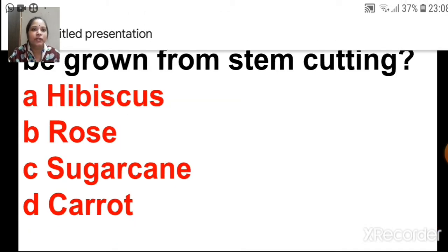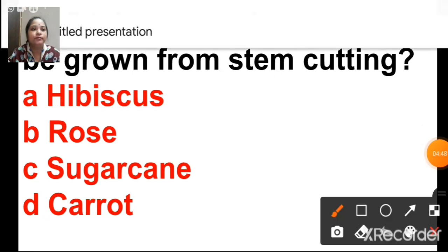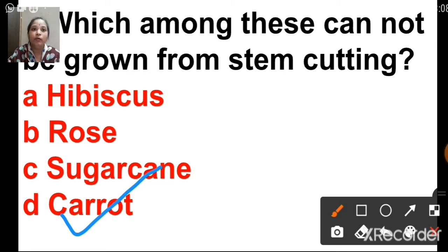Which among these cannot be grown from stem cutting? We know that stem cutting is a piece of stem having one or two buds on it from which a new plant can be grown. The options are hibiscus, rose, sugarcane and carrot. The answer is D — carrot, because carrot can be grown from its root. The other plants — hibiscus, rose, sugarcane — can be grown from stem cutting.